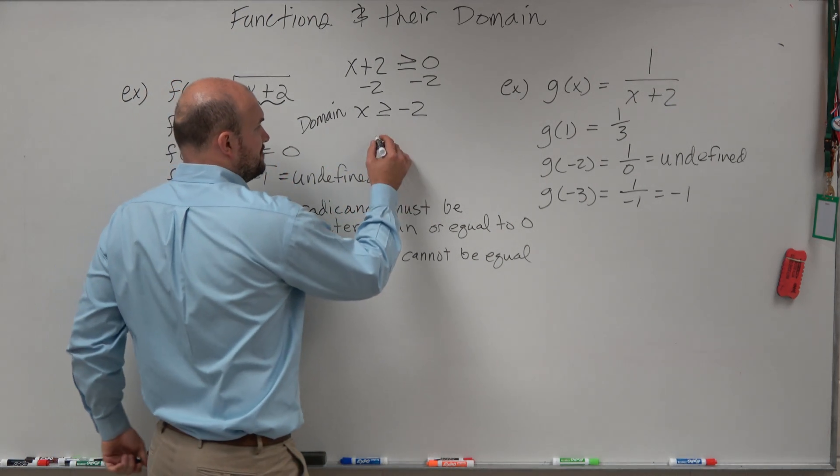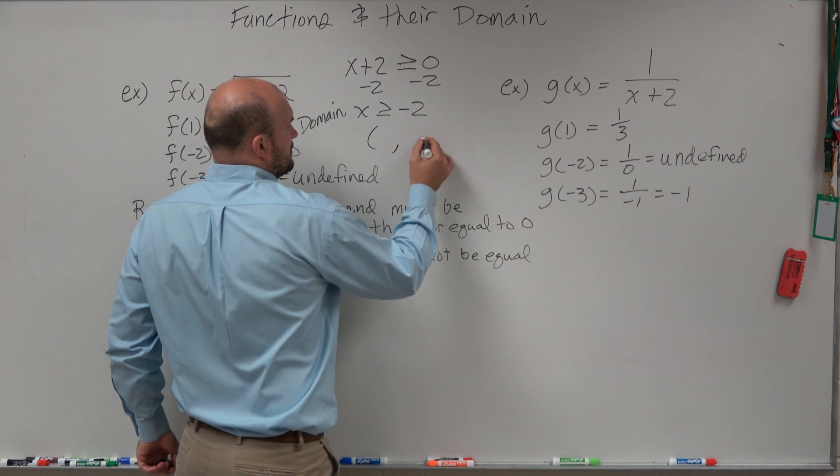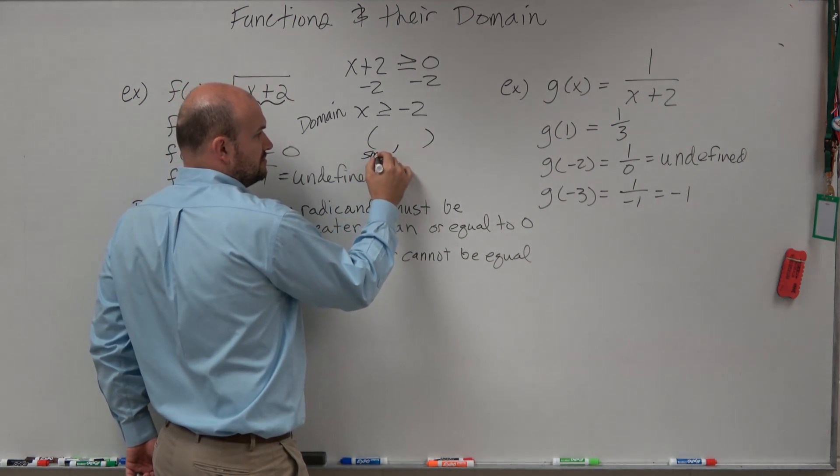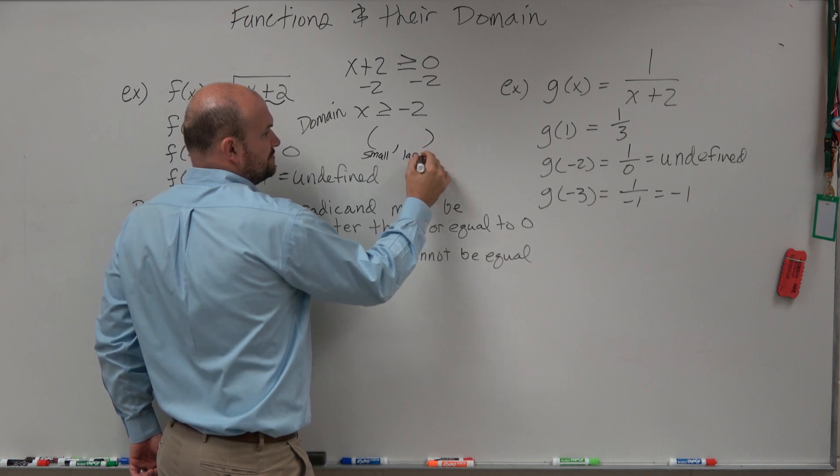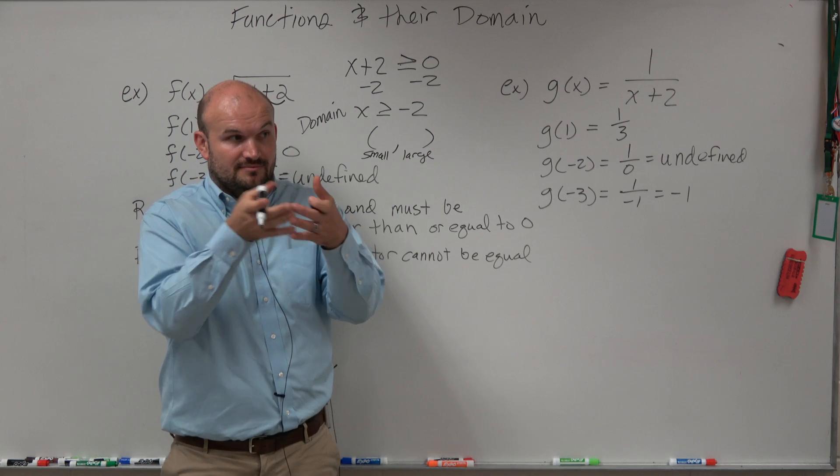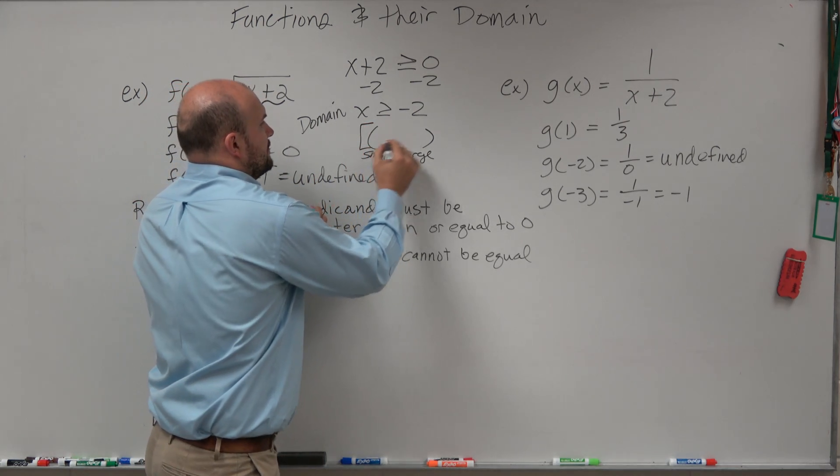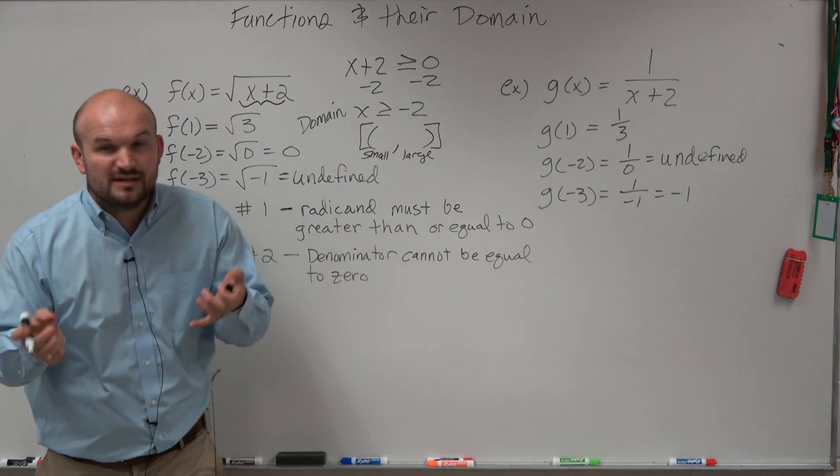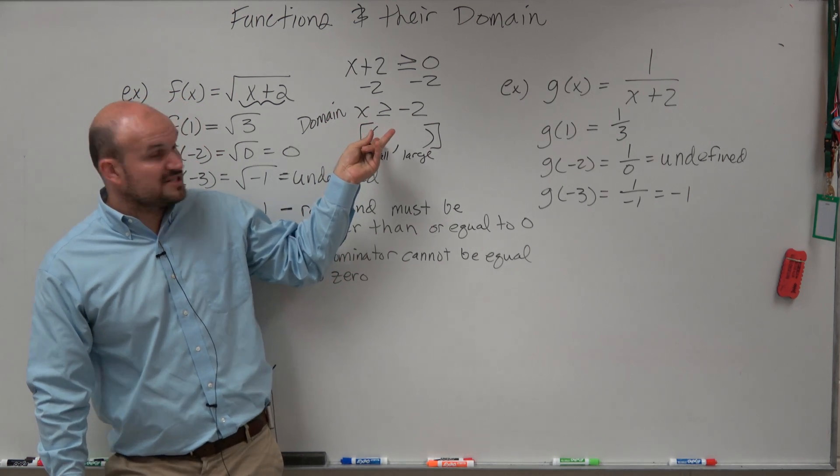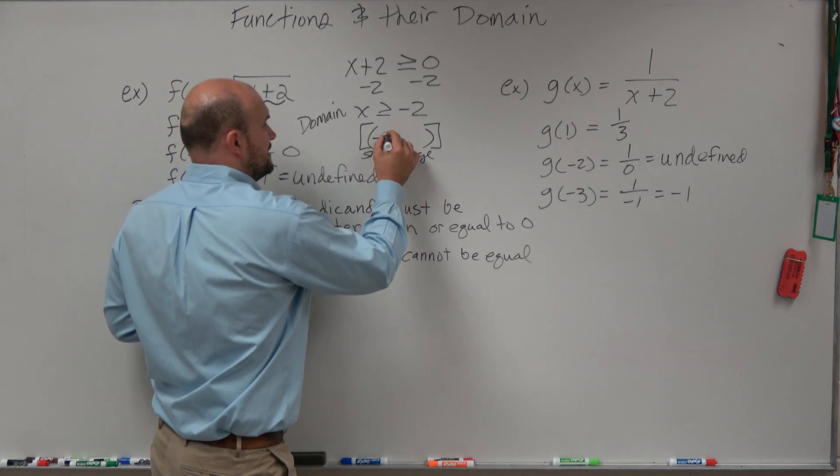So when you're doing interval notation, you basically have two values. You have the smallest and then you go to the largest. Small, large. So you do the smallest value first and then to the largest. And it can be included or not included. So the smallest value is negative 2. So we'll write that in there. Now, is negative 2 included?